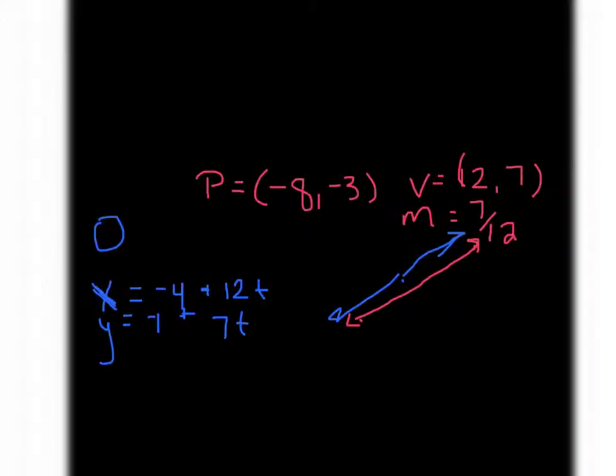All right, and this says with a partner, but you might not have a partner at home that you're doing this with. So what I want you to do now is I want you to take a moment, pause the video, and I want you to do example number 2. All right, I have also done example number 2. It says consider the line given by the parametric equation negative 8 plus 12t and negative 3 plus 7t.